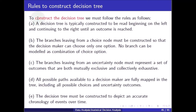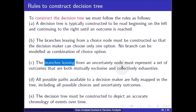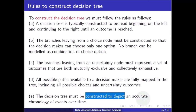To construct the decision tree, we must follow these rules. A decision tree is typically read from left to right until the outcome is reached. The branches leaving from a choice node must be constructed so that the decision maker can choose only one option — no branch can be modeled as a combination of choice options. The branches leaving from an uncertain node must represent a set of outcomes that are both mutually exclusive and collectively exhaustive. All possible paths available to a decision maker are fully mapped in the tree, including all possible choices and uncertainty outcomes. The decision tree must depict an accurate chronology of events over time.